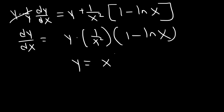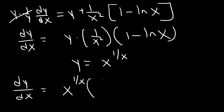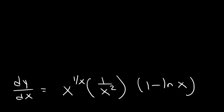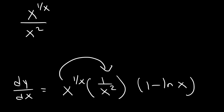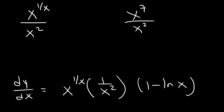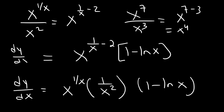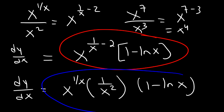Recall that y is x raised to the 1 over x, so the answer is dy/dx equals x to the 1 over x times 1 over x squared times (1 minus ln x). Since we have a common base x, we can simplify x to the 1/x divided by x squared using exponent subtraction — 1/x minus 2 — giving the final simplified answer: dy/dx equals x to the (1/x minus 2) times (1 minus ln x). Both forms of the answer are acceptable.